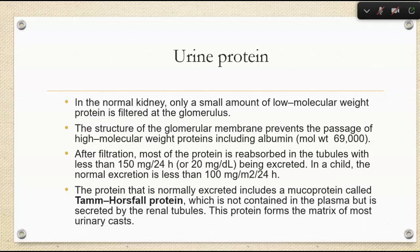Now we move into urine protein. In the normal kidney, we're typically only going to see a small amount of low molecular weight protein filtered at the glomerulus. The glomerular membrane prevents any high molecular weight proteins — including albumin, which is a large protein molecule — from being excreted into the urine. After filtration, most protein is reabsorbed into the tubules because our body wants to recycle it, break it down to amino acids, and use those building blocks for something else.